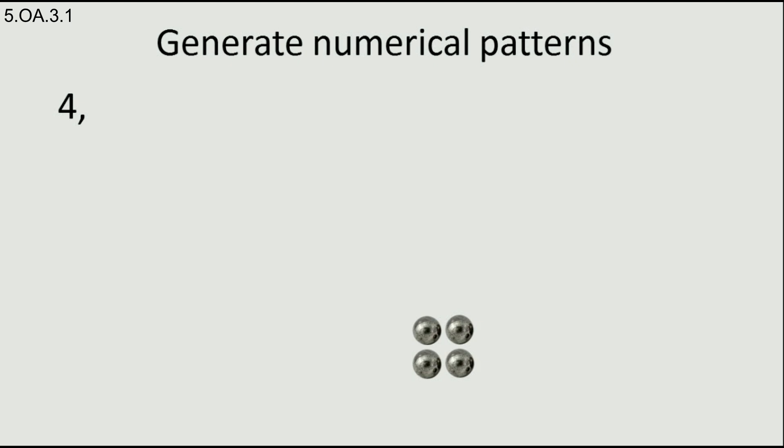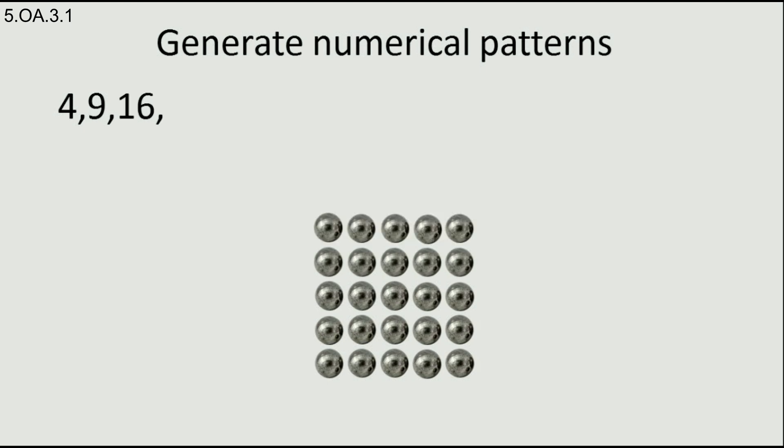The smallest square we can form is using four iron balls. The next square has nine balls.